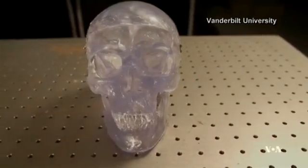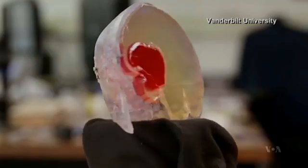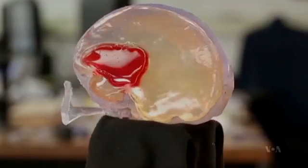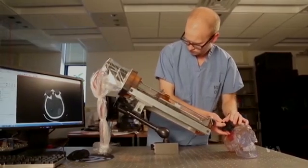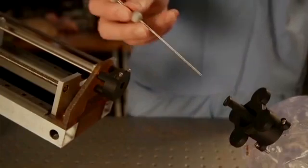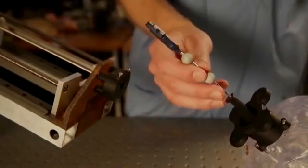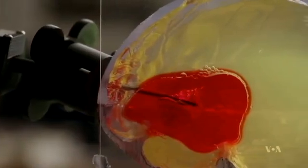This is a mold full of gelatin shaped like a brain. The red portion represents a blood clot. Researchers at Vanderbilt University are using the gelatin to test a robot equipped with a steerable needle designed to get to the clot and remove it without damaging the surrounding tissue.